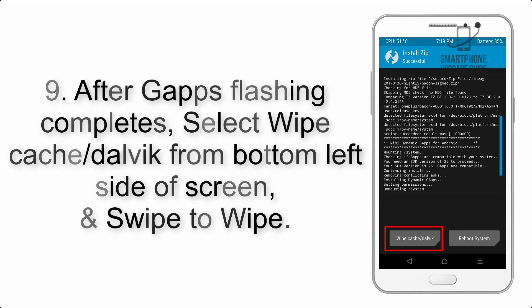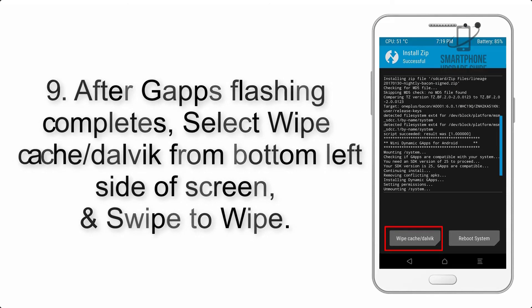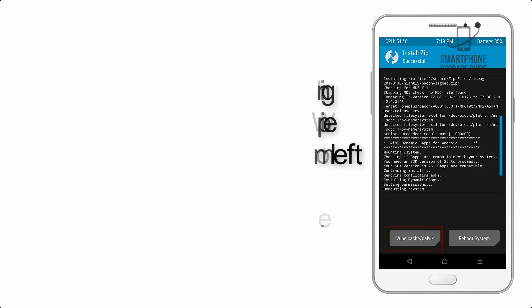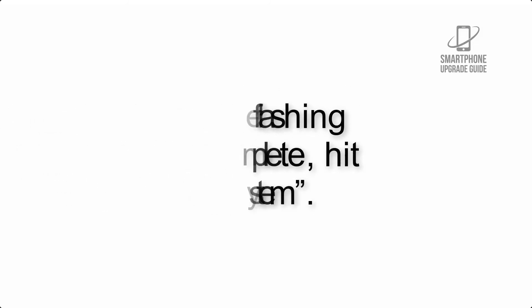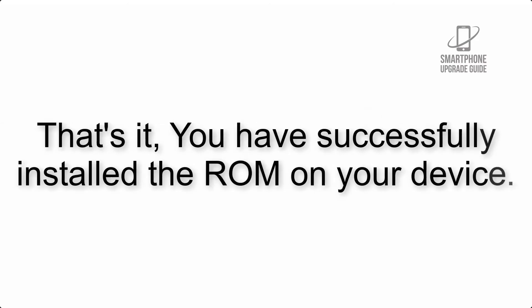Step 8: Flash the GApps zip package in the same manner. Step 9: After GApps flashing completes, select Wipe Cache and Dalvik from the bottom left side of the screen and swipe to wipe. Step 10: When the flashing process is complete, hit Reboot System. That's it — you have successfully installed the ROM on your device.